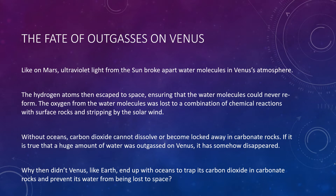If it is true that a huge amount of water was outgassed on Venus, it has somehow disappeared. The leading hypothesis invokes one of the same processes thought to have removed water from Mars. Ultraviolet light from the sun broke apart water molecules in Venus's atmosphere. The hydrogen atoms escaped to space through thermal escape, ensuring that the water molecules could never reform. The oxygen was lost to a combination of chemical reactions with the surface rocks and stripping away by solar winds. Venus's lack of a magnetic field leaves its atmosphere vulnerable to solar wind.